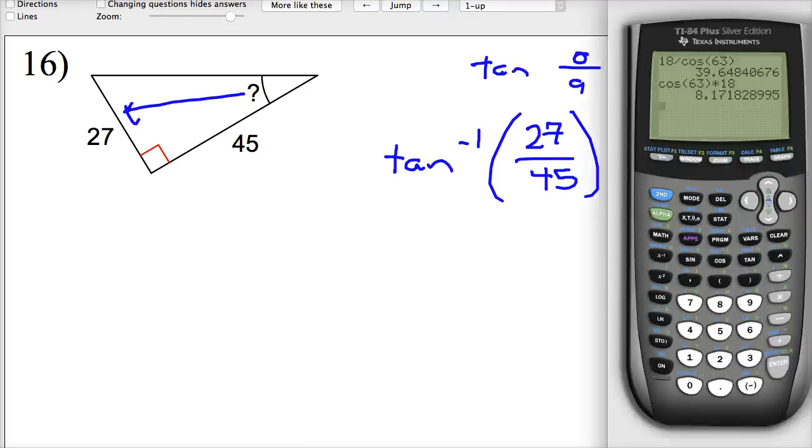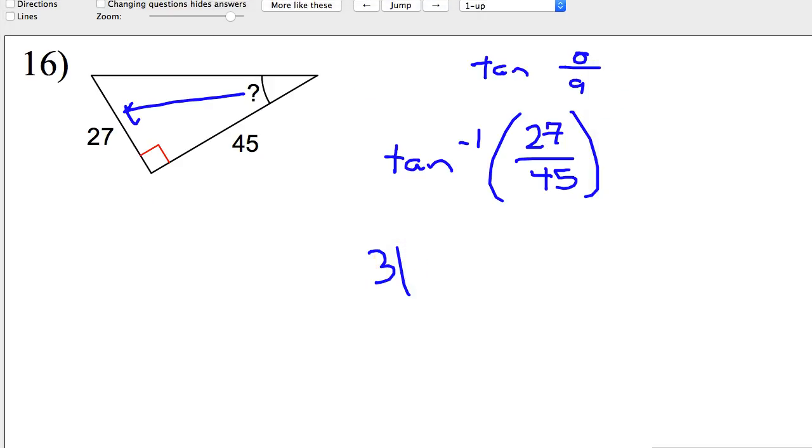When I do inverse tangent, all I'm going to do is put the ratio inside. The opposite side is 27. The adjacent side is 45. All you have to do is hit second, and you hit the tangent button, and it should give you that negative one there. And then, just go ahead and put in your ratio. Close it up. 30.9. So, about 31.